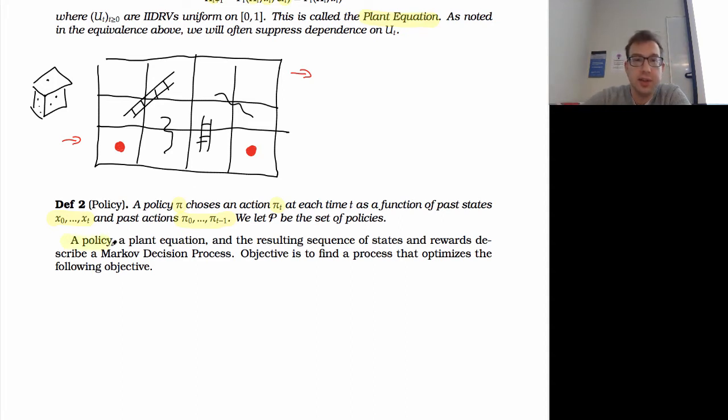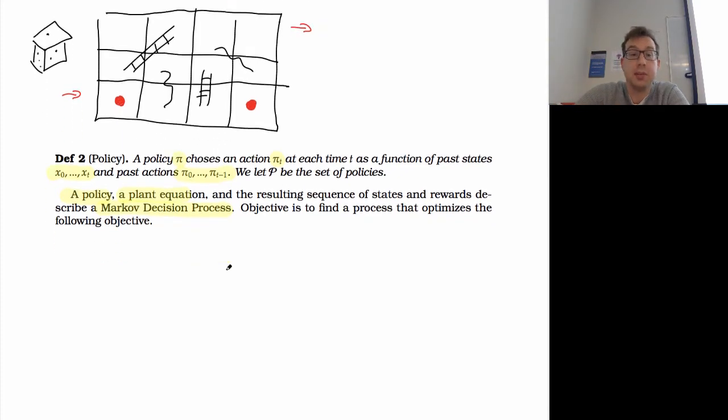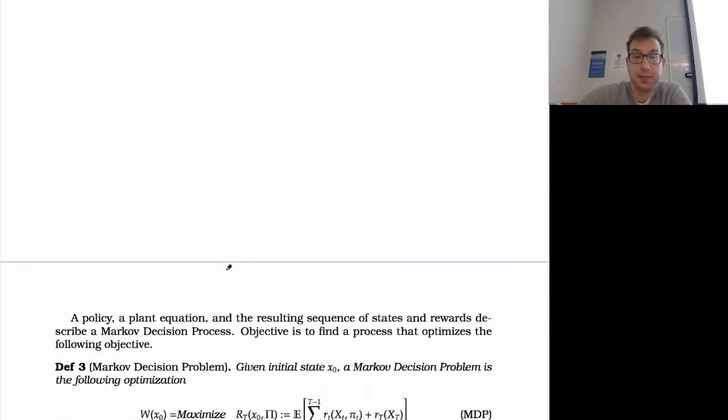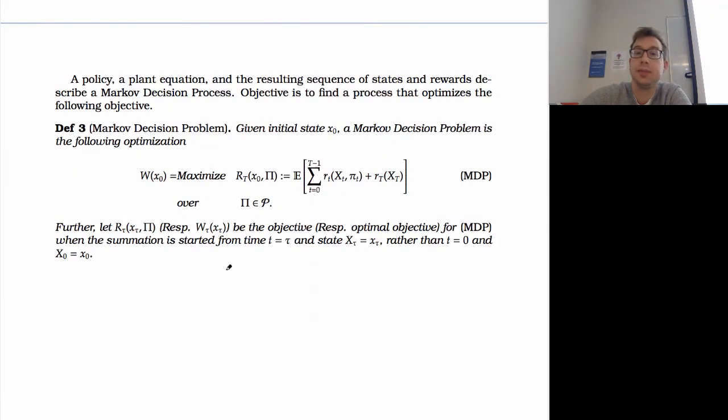So a policy, a plant equation, and the resulting sequence of states and rewards that we get from this is called a Markov decision process. So it's a Markov chain, the way you make decisions, essentially. And the objective is very similar to what we had before. We want to maximize the sum of rewards.